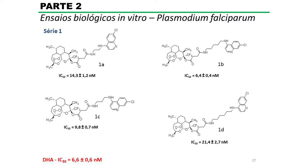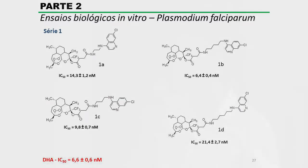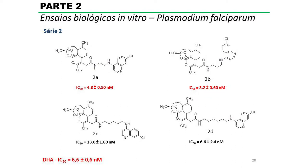Esses derivados foram testados in vitro. A gente obteve atividades ótimas, todas na escala de nanomolar. Aqui são os resultados obtidos para a primeira série. E na segunda série, a gente teve resultados ainda melhores — conseguimos algumas substâncias que foram mais ativas do que a di-hidroartemisinina, que é utilizada no tratamento de primeira escolha da malária. Atualmente, esses derivados estão sendo testados in vivo na França para verificar se in vivo eles vão dar respostas tão boas quanto foram obtidas in vitro.